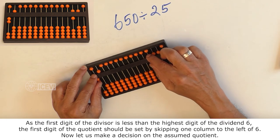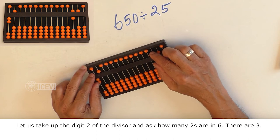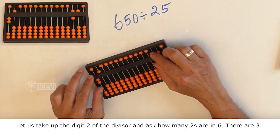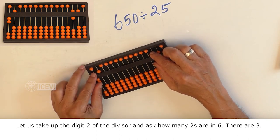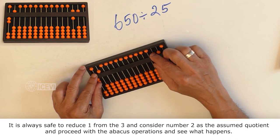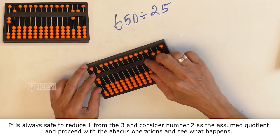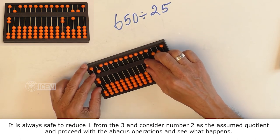Now, let us make a decision on the assumed quotient. Let us take up the digit 2 of the divisor and ask how many 2's are in 6. There are 3. It is always safe to reduce 1 from 3 and consider number 2 as the assumed quotient.